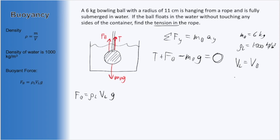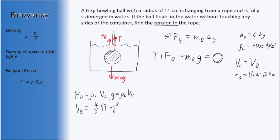Since the bowling ball is a sphere, to get that volume we will use the volume of a sphere equation, which is 4/3 π r³. In this case, we use the radius of the bowling ball, which is 11 cm, converted to 0.11 m. So our buoyant force can now be written as the density of the liquid times the volume of the entire bowling ball — since it is entirely submerged — which is 4/3 π r³, times gravity.